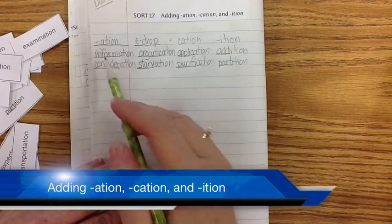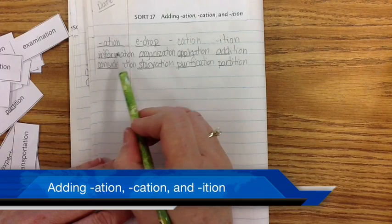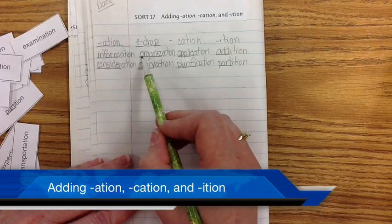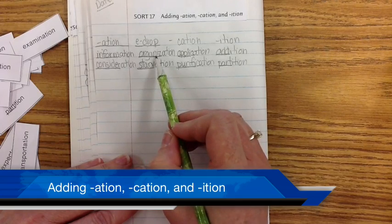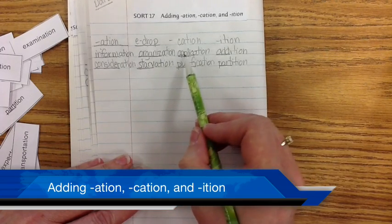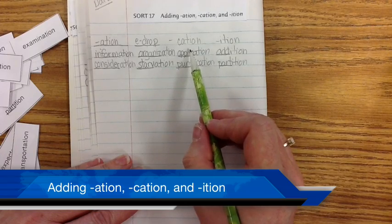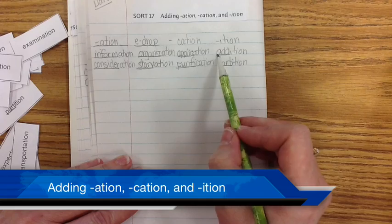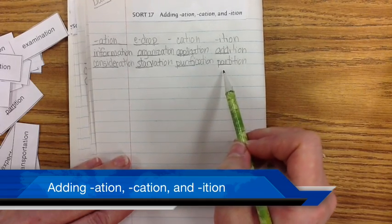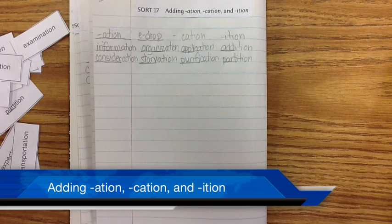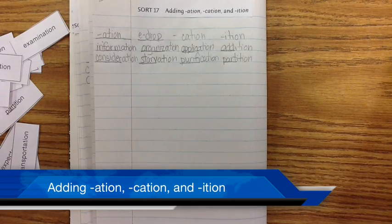Here's your start. Remember that here you have just the base word and you're adding A-T-I-O-N. Here you have to watch - did you have to drop an E and then put A-T-I-O-N on? And then here you had to change a Y to an I and add C-A-T-I-O-N. And this one you don't drop anything or change anything. You just add I-T-I-O-N. So go ahead and get that finished. If you have any questions, please ask us when you come back to school. That's it. Good luck. Get it done. See you at school.